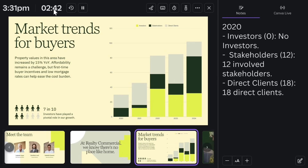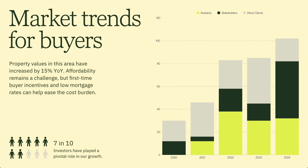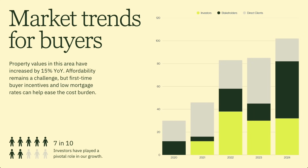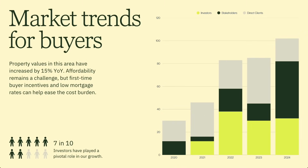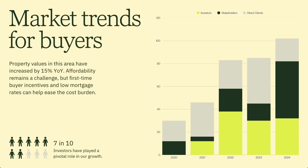The Realty Commercial team wants to infuse the presentation with a bit of fun and flair to captivate their audience. Canva includes magic shortcuts to add fun, interactive elements: press C for Confetti to celebrate key moments, B to blur the screen for dramatic pauses, and D for a drum roll before a big reveal.